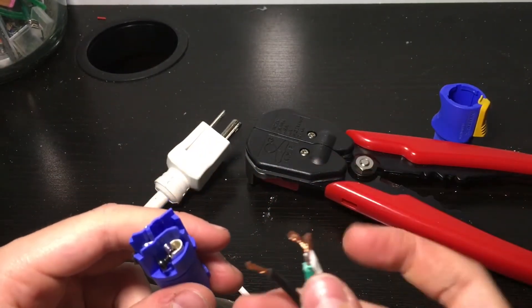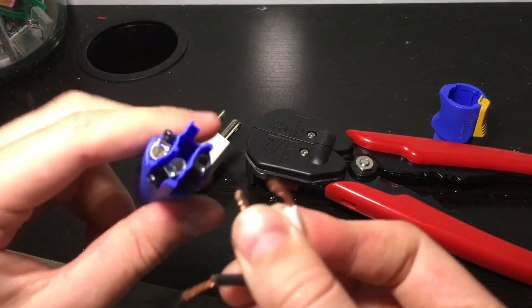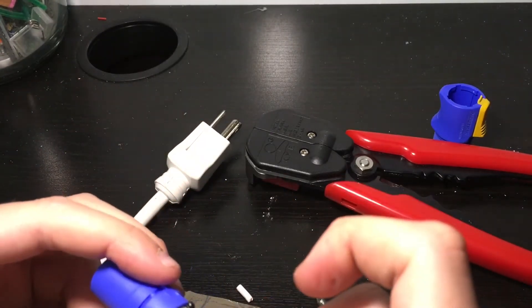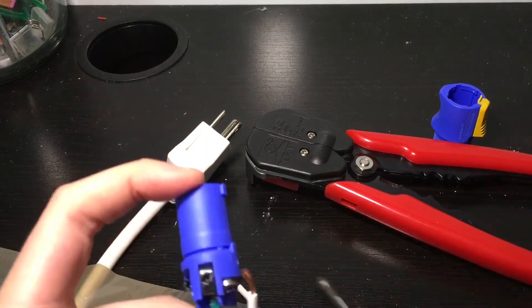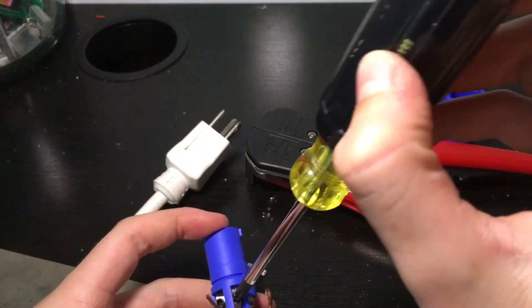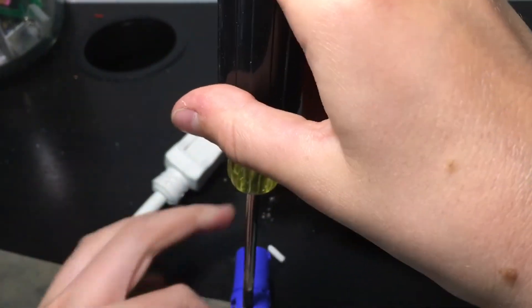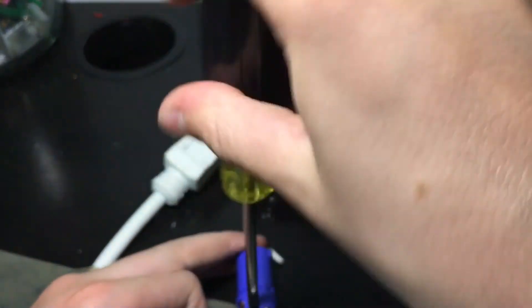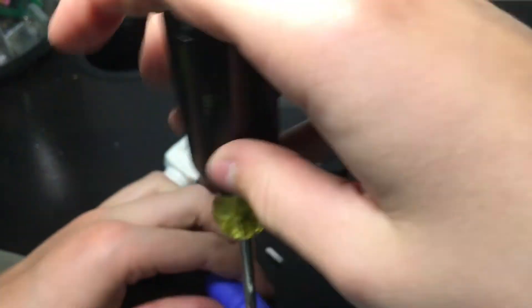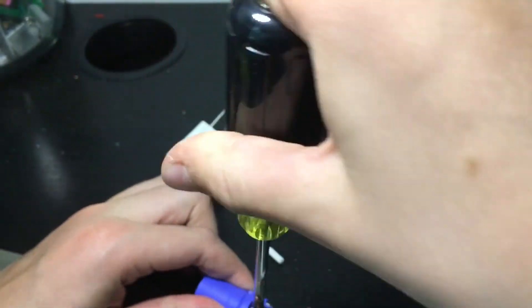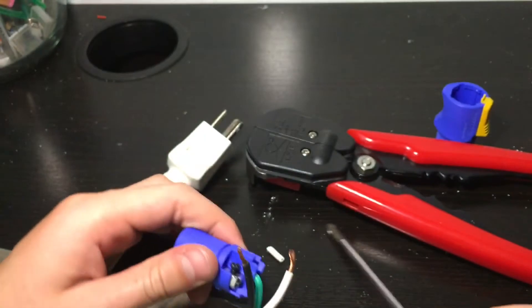You're going to take the green and put it into Earth. Make sure it's tightened down all the way, because you don't want these pulling out in your cable because it's very hard to fix it if they pull out. So tighten it down as tight as you can without stripping it, of course.